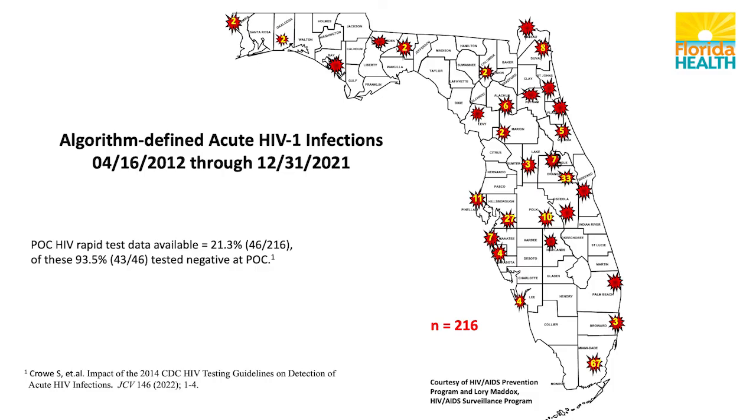Our policy since 2012 is to notify the healthcare providers and the regional DIS and patient care staff on all of these acute cases in real time. This is in addition to the electronic lab reporting. So they'll actually get phone calls from the laboratory with specifics on these acute cases before they receive the electronic lab order. This moves them to higher priority for linkage to care and partner referral.